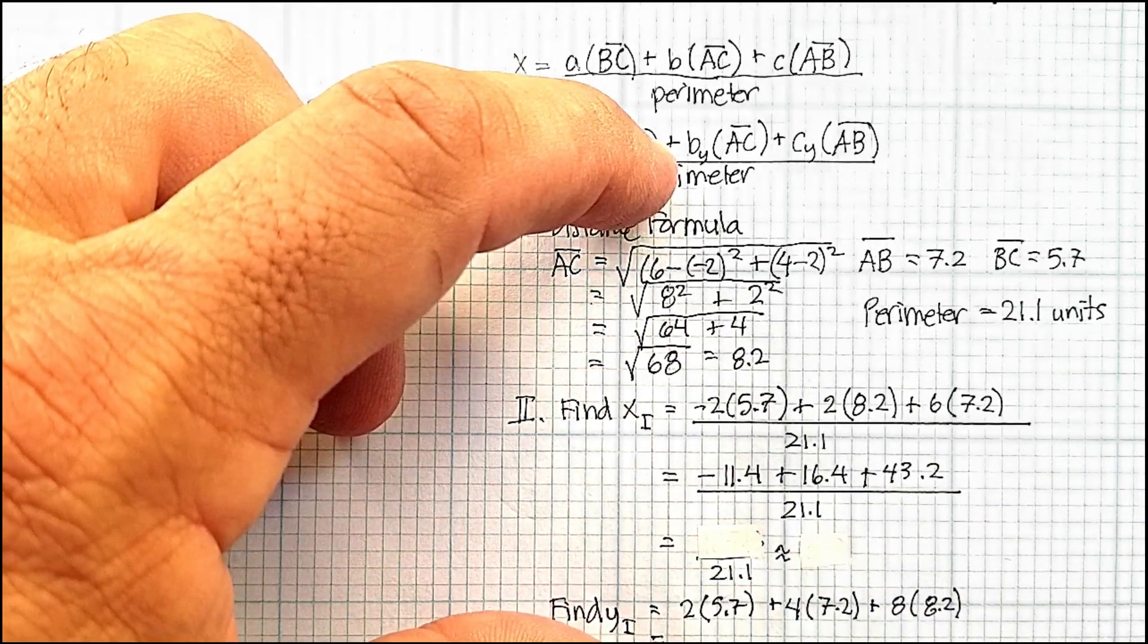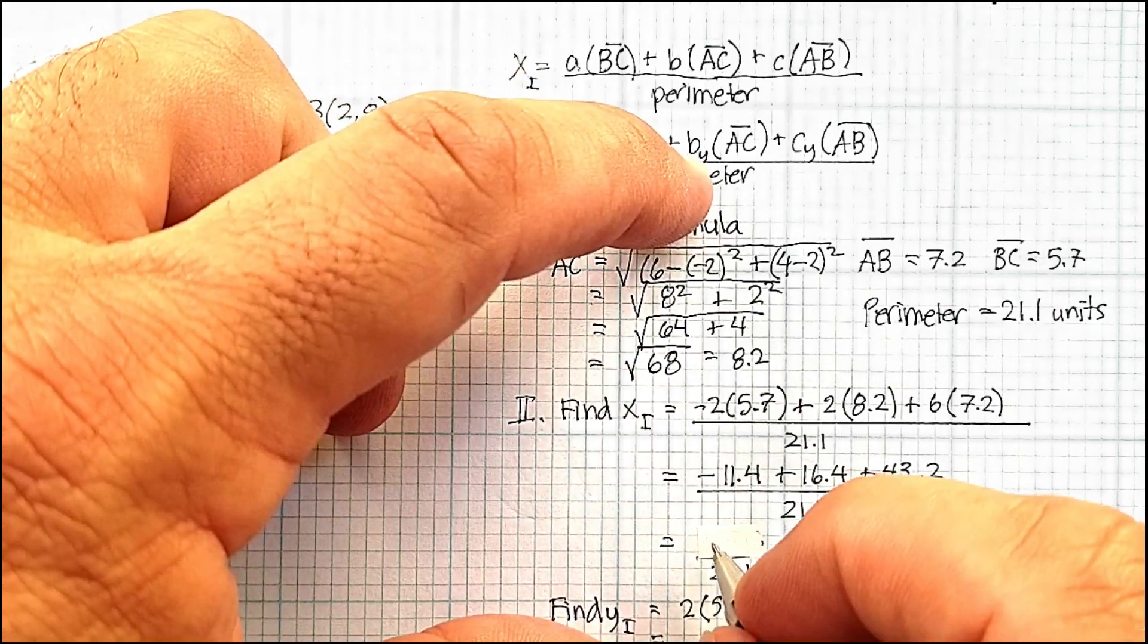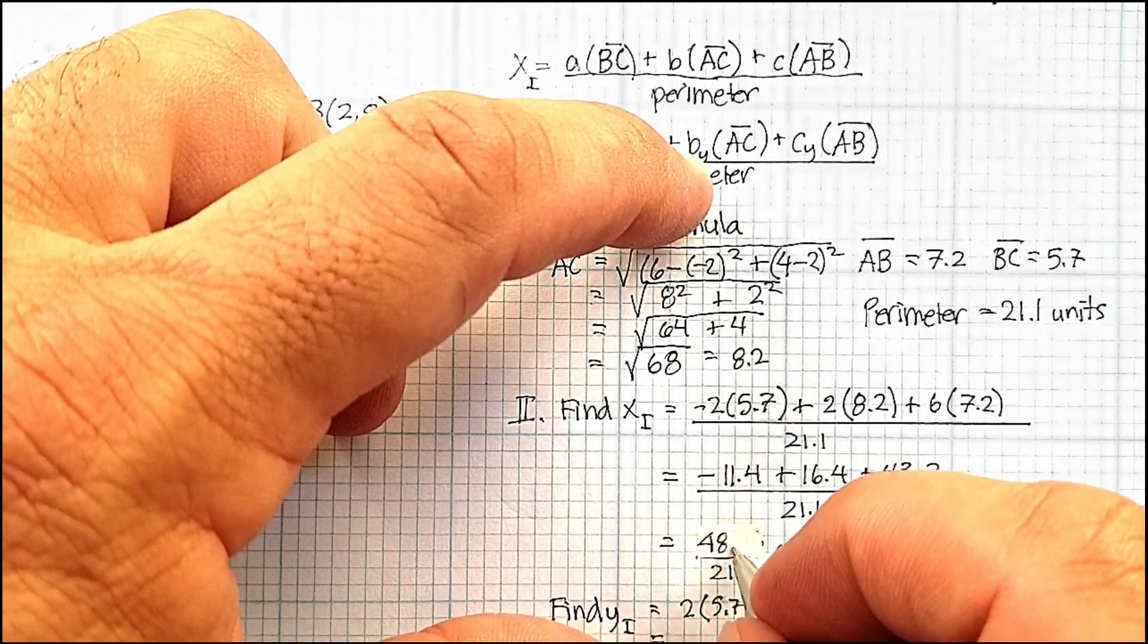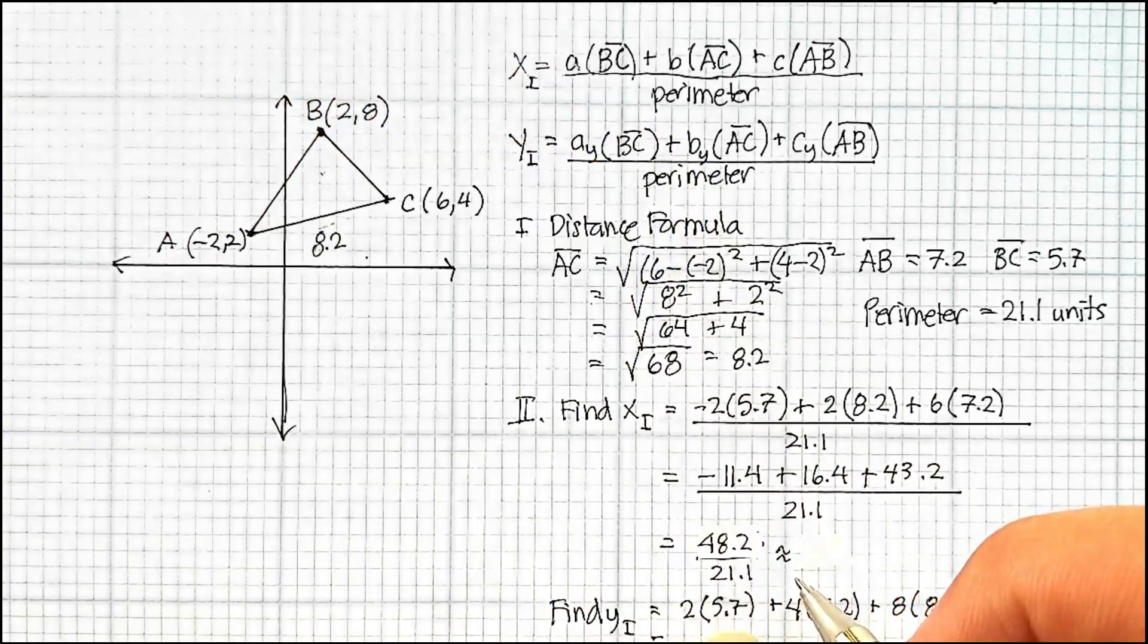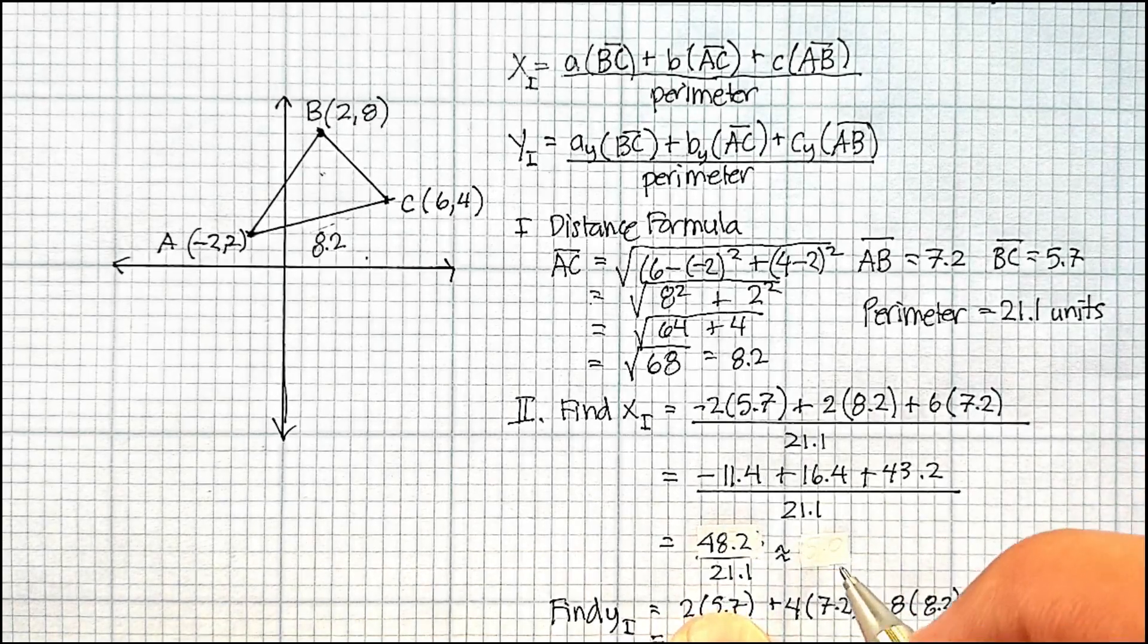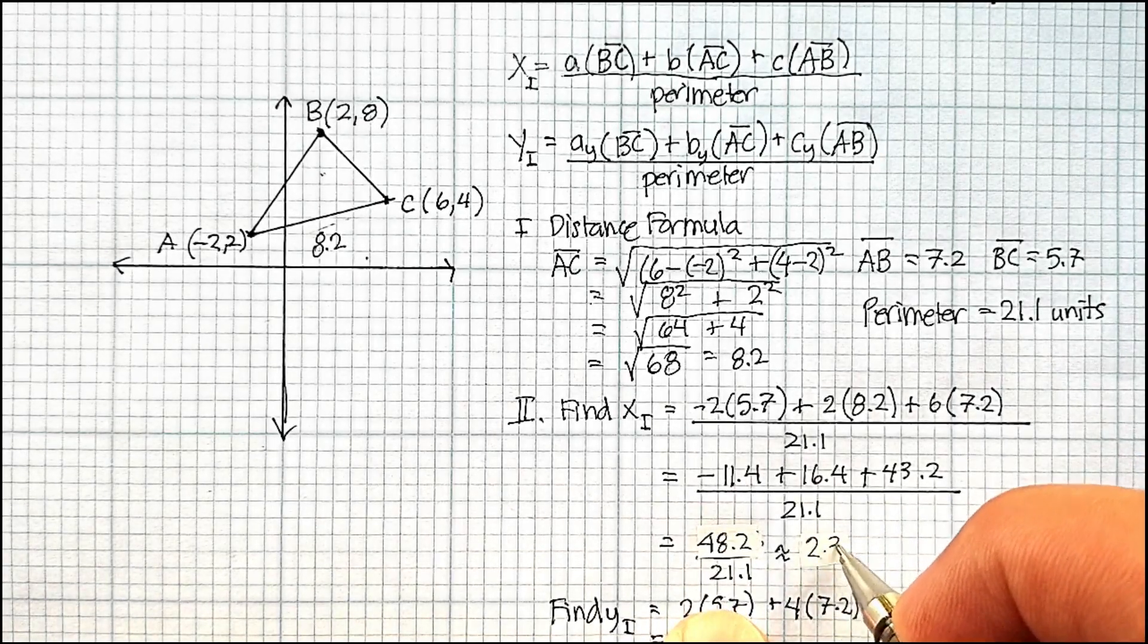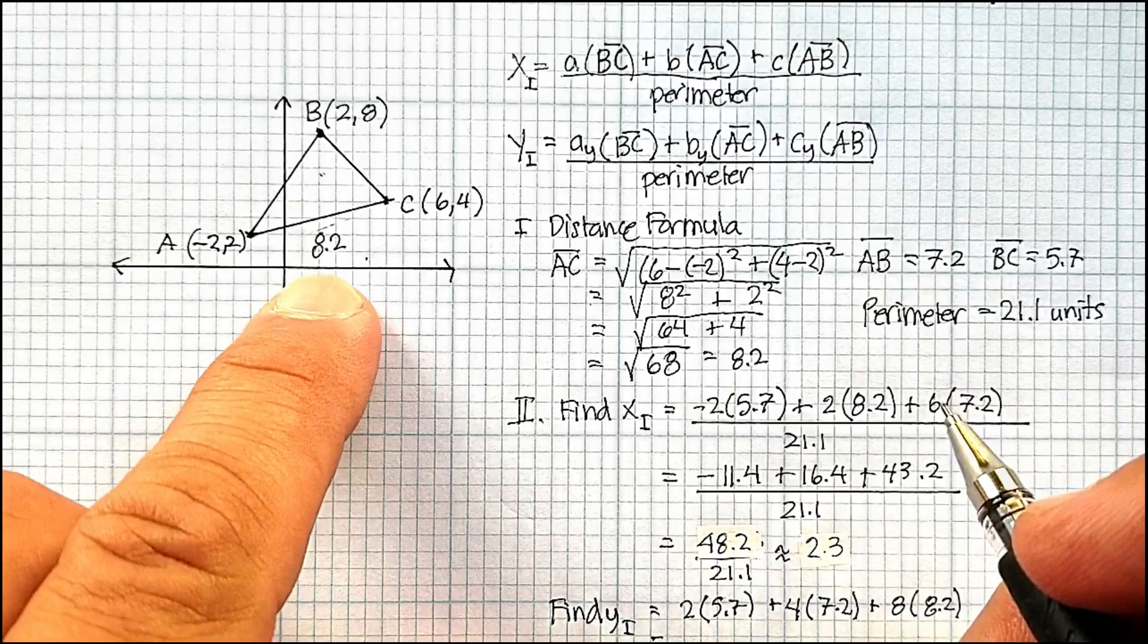48.2 divided by 21.1, and that's going to turn out to be approximately 2.3. That looks a little bit better. That looks a little bit better. I was trying to think to myself, how did 5 work? That doesn't work all of a sudden.